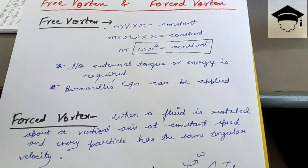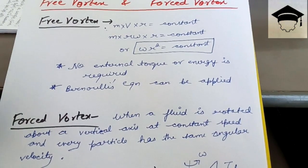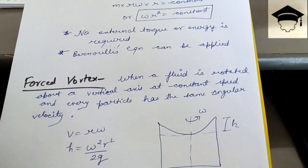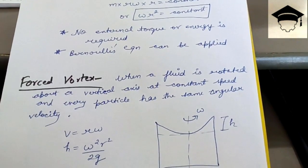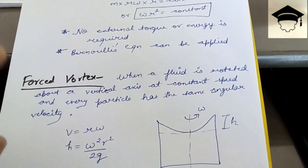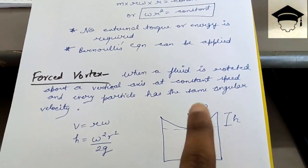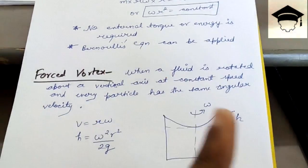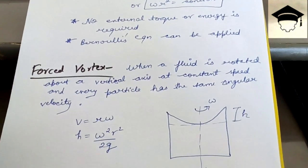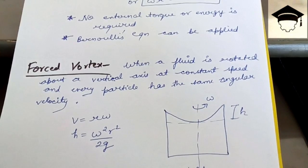Forced vortex flow is when a fluid is rotated about a vertical axis using external energy. The speed is constant for each and every particle, meaning each particle has the same angular velocity.